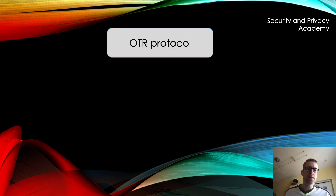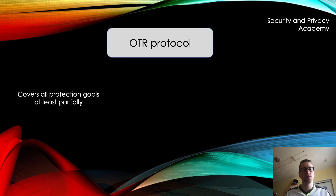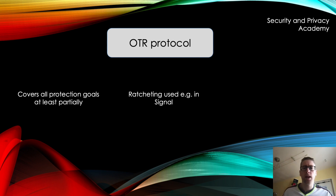To summarize, the OTR protocol covers all of the protection goals, at least partially. It even allows for anonymity. The whole process of changing keys — which still echoes, for example, in Signal — is called ratcheting. I've talked about ratcheting before in another video when I covered the Signal protocol; you'll find that video at the end of this one.